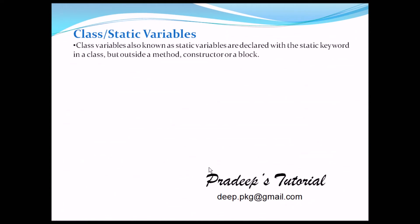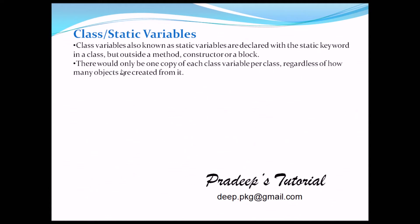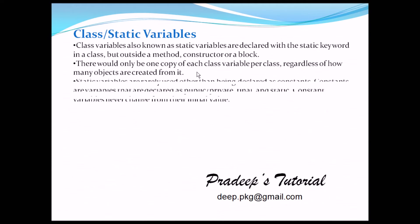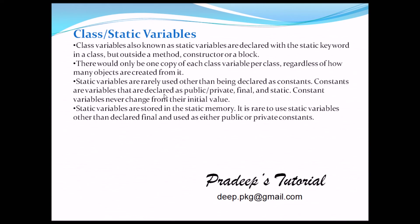Static variables — also known as class variables — are declared with the 'static' keyword but outside a method, constructor, or block of code. There will be only one copy of each class variable per class, regardless of how many objects are created from it. Static variables are rarely used other than being declared as constants. Constants are variables declared as public/private, final, and static — constant variables never change from their initial value.